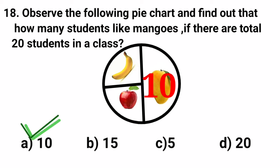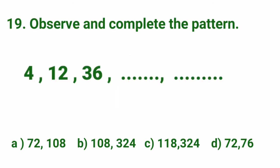Now, next, question number 19 is, observe and complete the pattern. Dear students, before selecting the right answer, first of all, understand the pattern. First is 4, then 12, then 36.